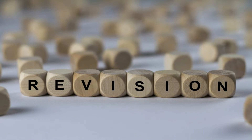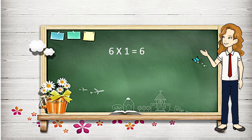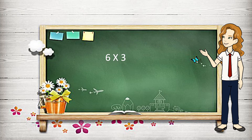It's revision time, let's have a revision. Six ones are six, six twos are twelve, six threes are eighteen, six fours are twenty-four.